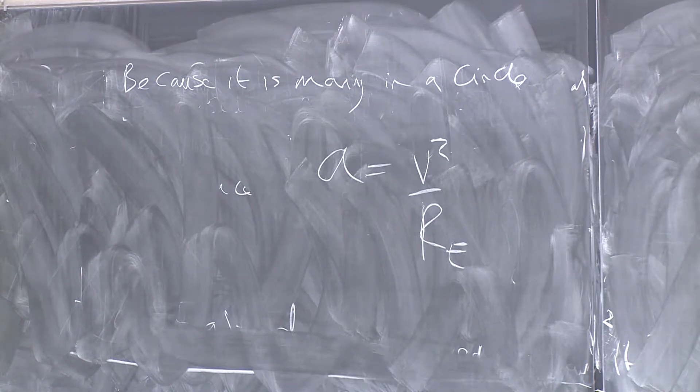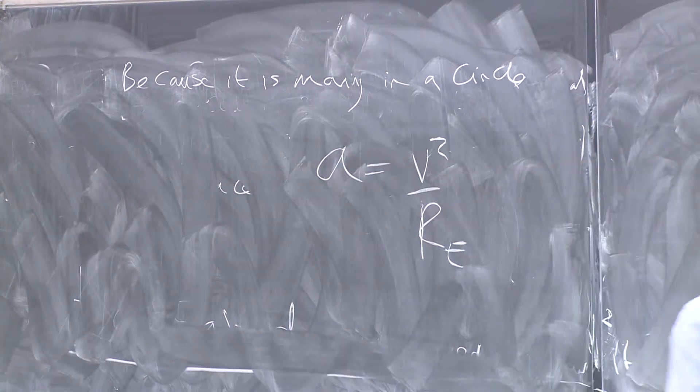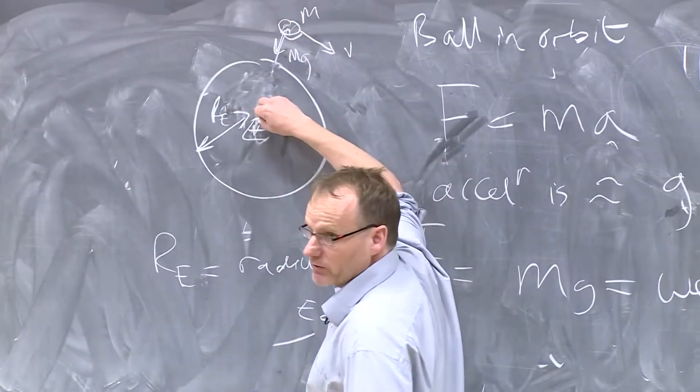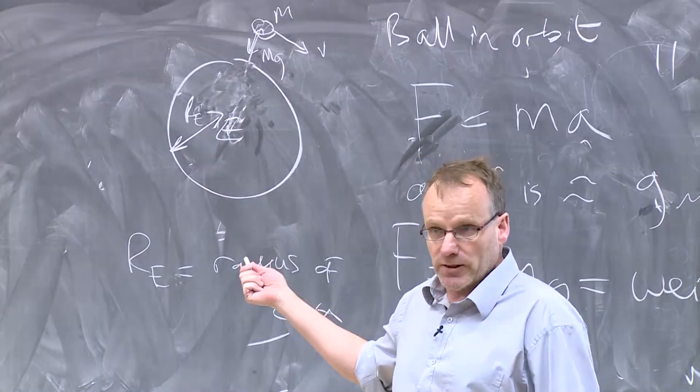I mean, it's close to being the radius of the Earth, because it's only 100 miles above. So what I'm trying to say is the distance from the ball to the center of the Earth is almost the same as the radius of the Earth. So we can just put that in.